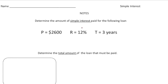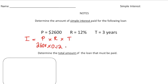Let's look at a problem together: determine the amount of simple interest paid for the following loan. Step one — always write down the formula: I equals P times R times T. Then plug in the values. The principal is $2,600, the rate is 12%, which as a decimal is 0.12, and the time is 3 years. So 2,600 times 0.12 times 3 gives us an interest amount of $936.